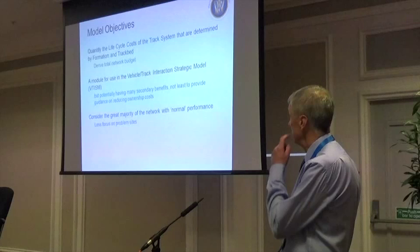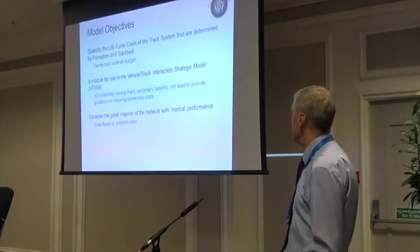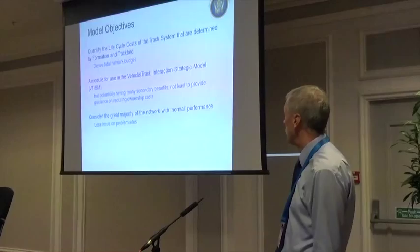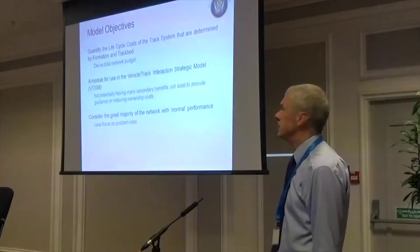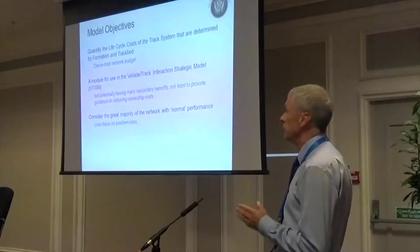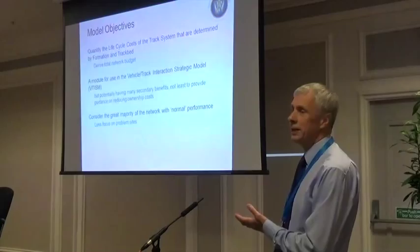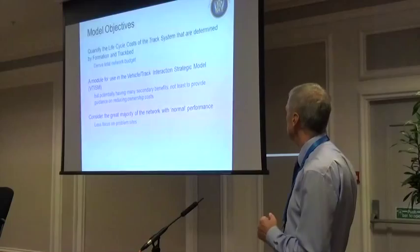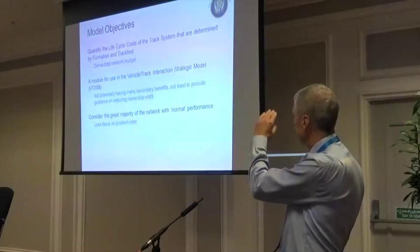The intention was to derive a network budget, be it for the next year, the next control period or whatever. It found a logical home in the emerging vehicle-track interaction strategic model. Once you've got a model of that nature which gives you the relationship between the inputs and the outputs being the cost, you've developed a tool where you can play tunes and perhaps try to reduce ownership costs. The first part is done; the opportunity now is to move more to the second part.